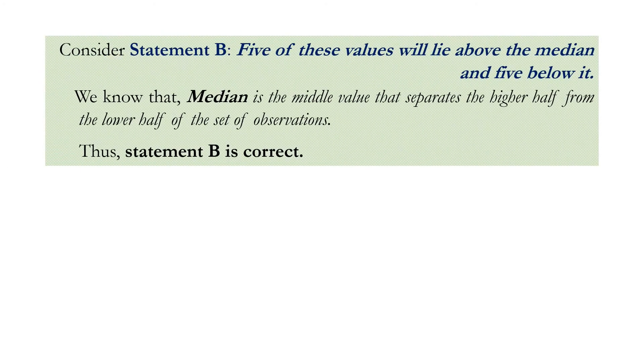Consider statement B which tells that 5 of these values will lie above the median and 5 below it. We know that median is the middle value that separates the higher half of the set of observations from the lower half. Thus we can say that statement B is correct.